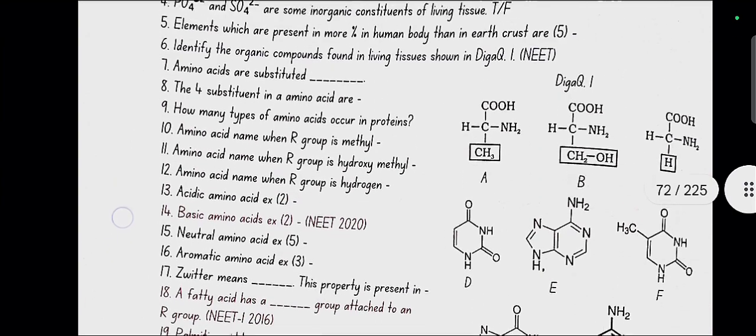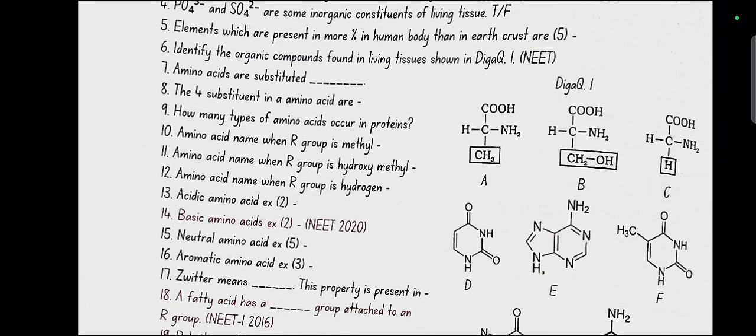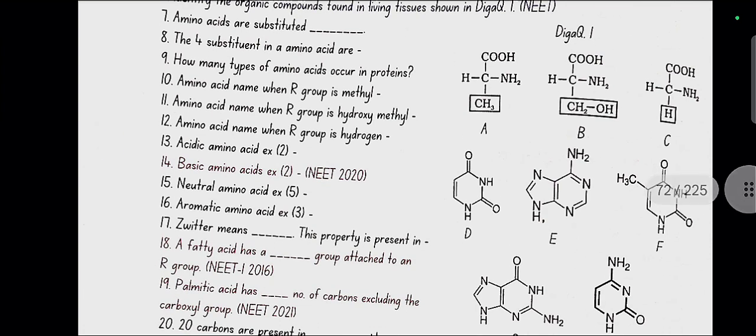Amino acids are situated. The four substituents in amino acid are hydrogen, carboxylic group, amino group and a variable group designated as R group. How many types of amino acids occur in proteins? 20.